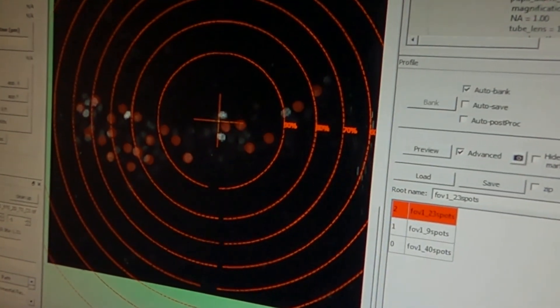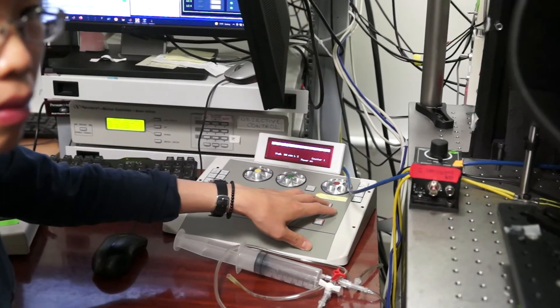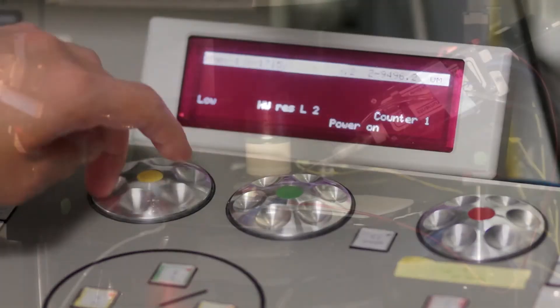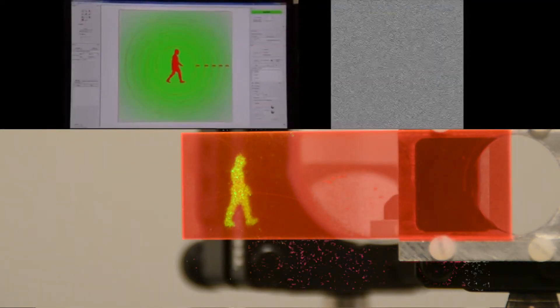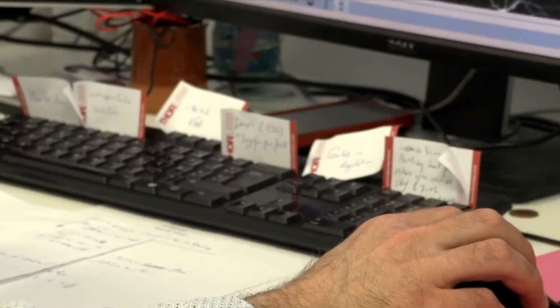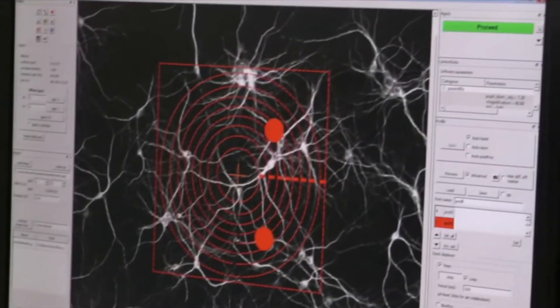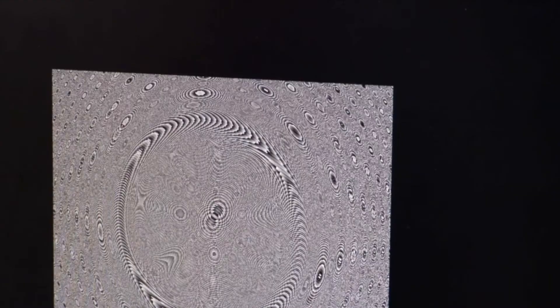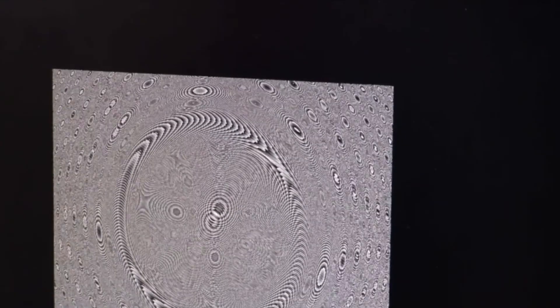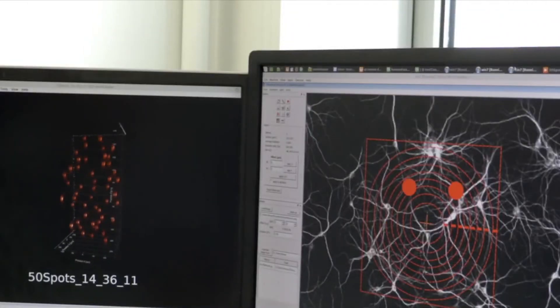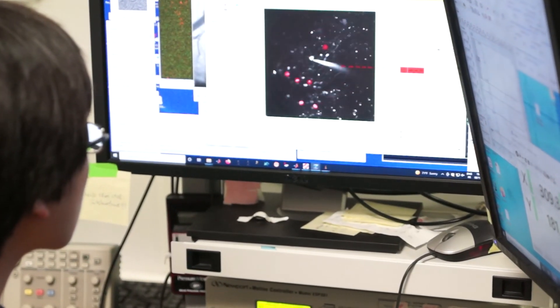Photoactivation can be performed with high spatial and temporal precision thanks to the combination of two-photon excitation and the ever-expanding optogenetic toolbox. Using computer-generated holography, we can activate a specific set of neurons by generating sequences of holographic patterns. With two-photon optogenetics, we can control the activity of single neurons or of ensembles.